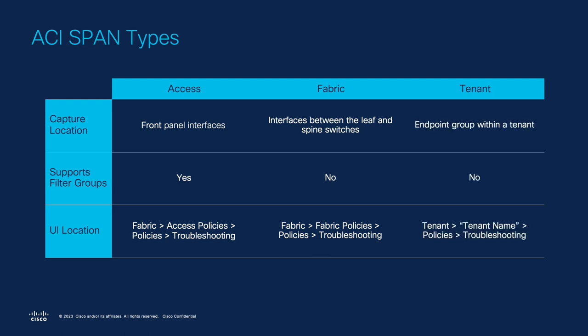Lastly, tenant SPAN is used to capture traffic that is ingressing and egressing a specific EPG within a tenant in ACI. So if you wanted to capture all the traffic on a specific EPG in your fabric, you could use a tenant SPAN. Filter groups are also not supported here, and configuration is done under Tenant > your user tenant name > Policies > Troubleshooting.